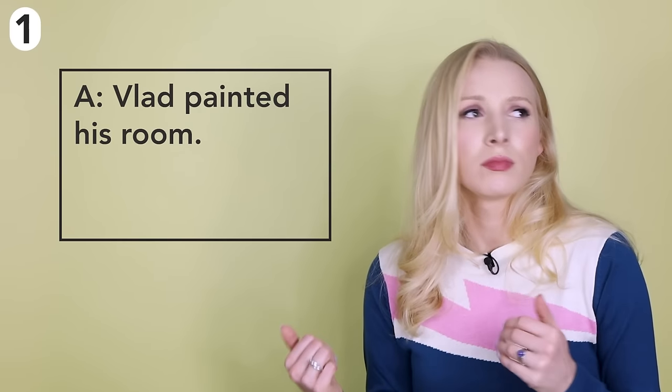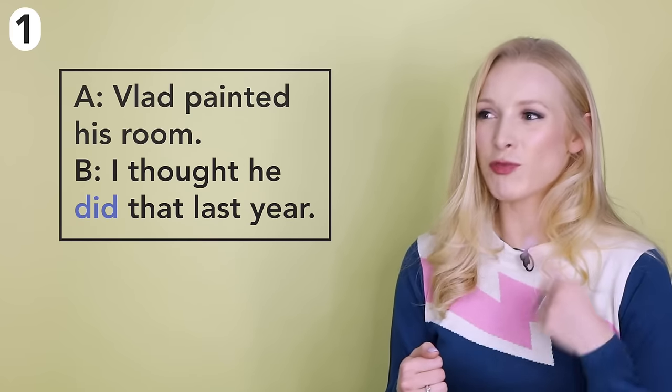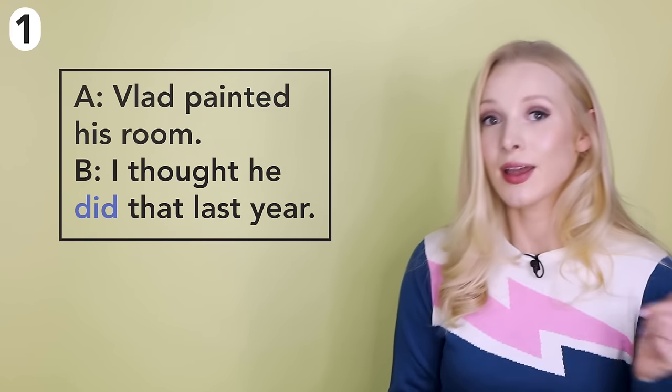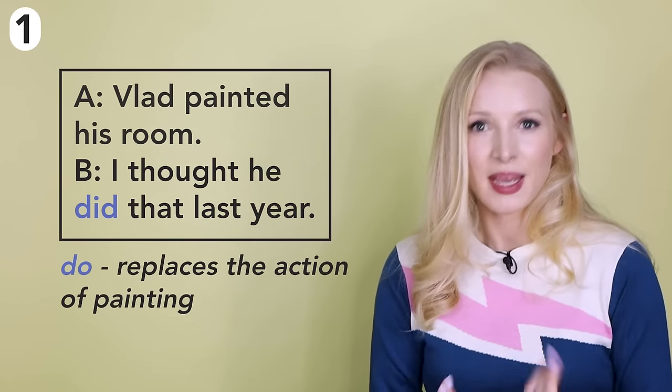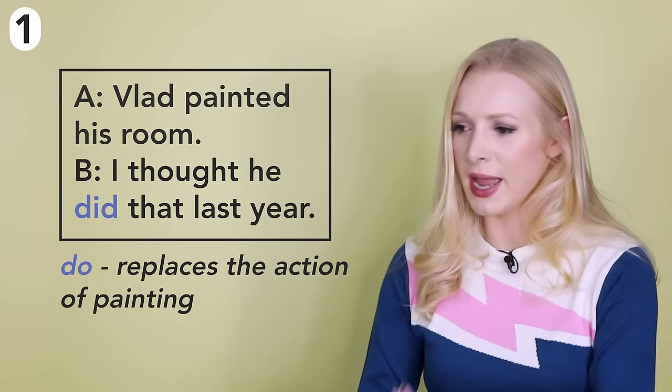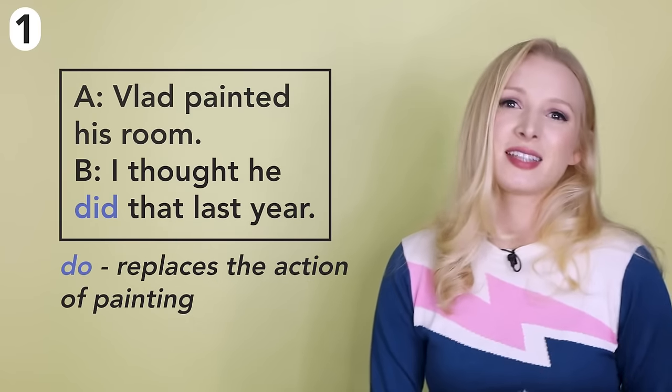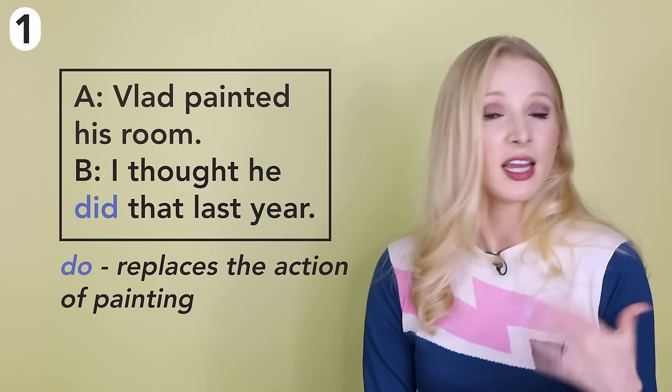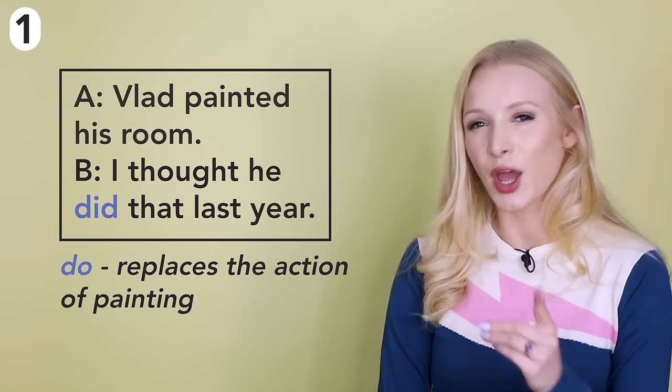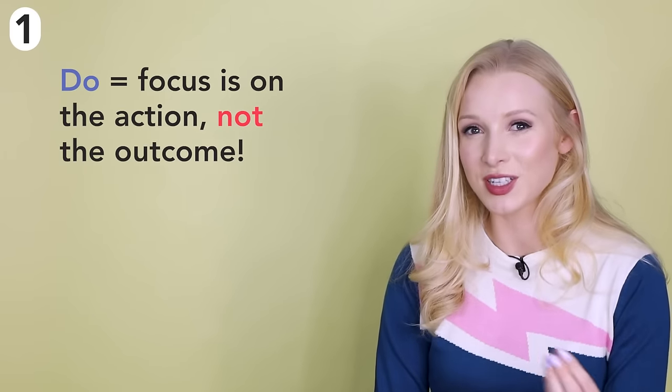In conversation, you might hear: Vlad painted his room. I thought he did that last year. Here, 'do' is replacing the action of painting. Instead of restating the verb phrase 'painting his room', we can replace the action with 'do' because the action is already understood in the context of the conversation. The focus is on the action, not the outcome. Understanding this difference will really help you to make the right decision about which verb to use, but note that this is a guide — there are always exceptions.